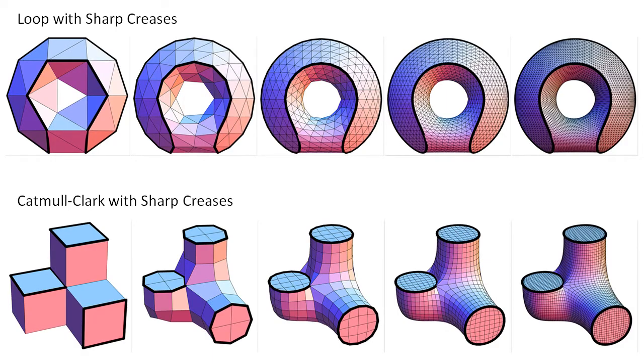The two popular subdivision algorithms that have been extended to allow for sharp creases are Loop for triangle meshes and Catmull-Clark for quad meshes. The refinement rules along the crease edge is identical to cubic B-spline subdivision for curves.